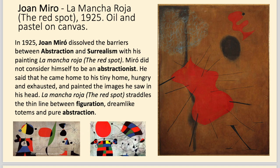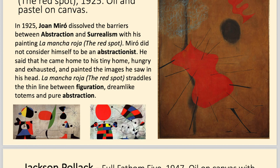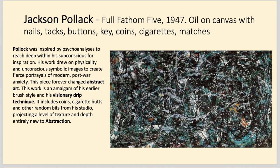Miro didn't consider himself to be an abstract artist. He was very, very hungry, and when he came back he used to hallucinate all these little images on his walls from the state of hunger, and so he painted all the images he used to see and hallucinate. Jackson Pollock, in the 1940s, started creating very dynamic, very textured paintings. He added all sorts of things — like coins, cigarette butts and other random bits from his studio — and became known for this style where you throw the paint. It's true expression of movement; the technique itself creates the feeling of the painting.